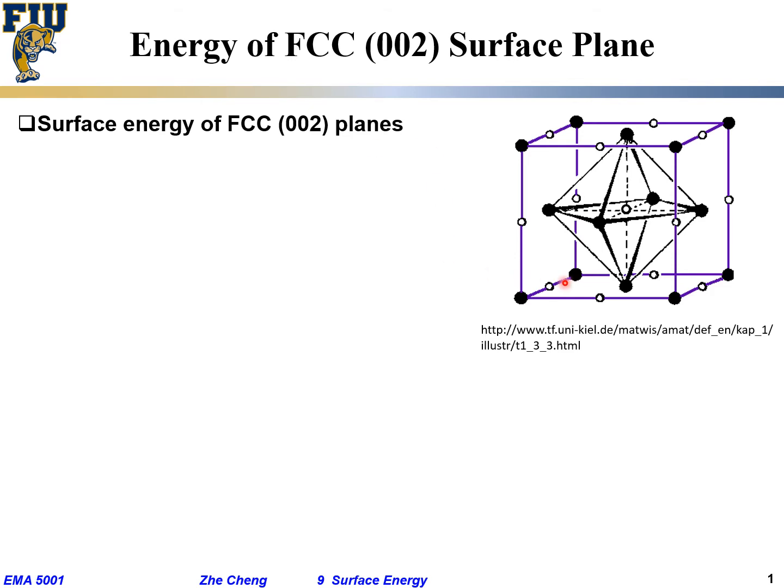If this is your origin at the corner, where is our (002) plane? Well, you would be half right. It will be this here, because this one would be (001). But halfway in the middle, that's our so-called (002) plane.